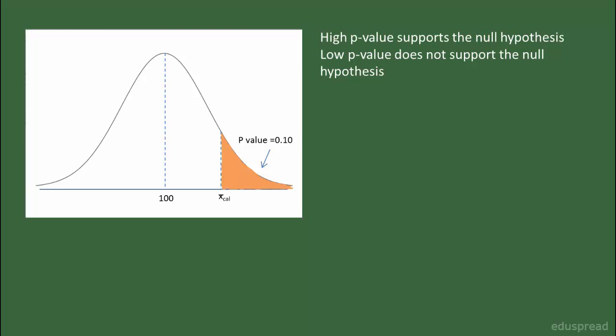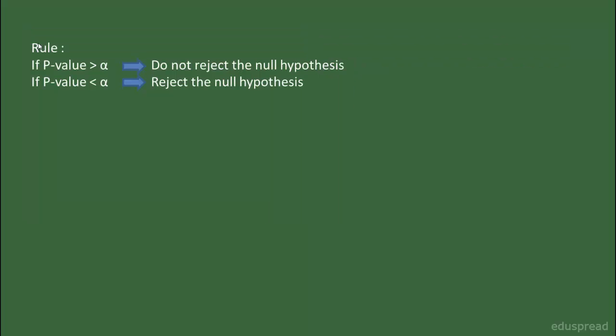A high P-value supports the null hypothesis and a low P-value does not support the null hypothesis. But what determines whether the P-value is high or low? It is the level of significance that determines this. The rule is: if the P-value is greater than alpha, then we do not reject the null hypothesis. And if the P-value is less than alpha, then we reject the null hypothesis. It is as simple as that, and the value of alpha will be given to you in the question.